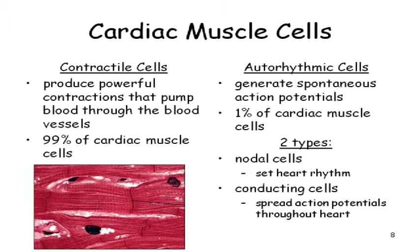There's about 1% that are actually specialized — they're called the auto-rhythmic cells. The auto-rhythmic cells basically control or stimulate the contractile cells. Within those auto-rhythmic cells, you've got two types: nodal cells and conducting cells. The job of the nodal cells is to set the rhythm, while the conducting cells spread this electrical signal — the action potential — to the rest of the cells.